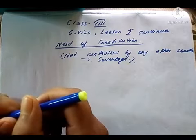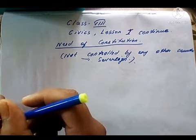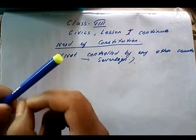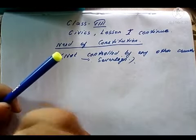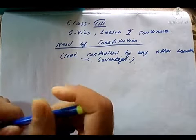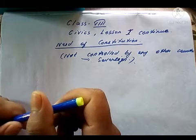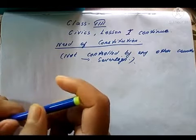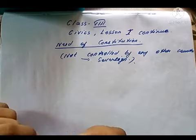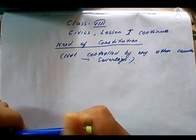The constitution serves certain functions. The first and foremost function is that rules and principles are provided in the constitution, and everybody should respect and abide by these rules. These rules and regulations are to be followed not only by the people but also by the government. There are certain rights given to the people and also certain duties given to the people which we should follow.